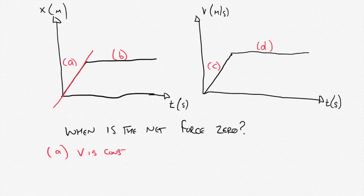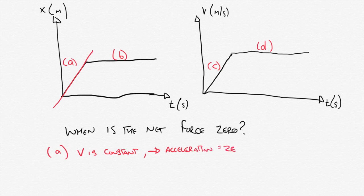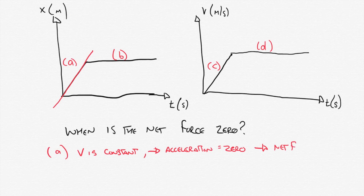Velocity is constant — that's the first thing we can write down. So if the velocity is constant in region A, that must tell us that the acceleration is equal to zero. And if the acceleration equals zero, that must mean by Newton's second law that there's no net force acting on the object. So the velocity is constant, therefore the acceleration is zero, therefore the net force acting on the object is zero.